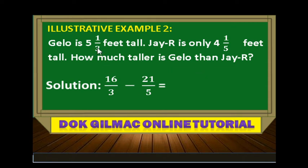From here, there are two mixed numbers, so we're going to change them first into improper fractions. So we have 3 times 5 is 15, plus 1 is 16 all over 3. Minus 5 times 4 is 20, plus 1 is 21 all over 5.